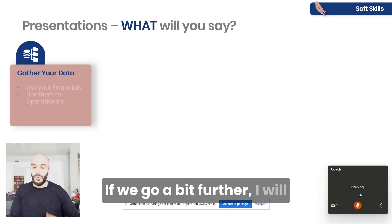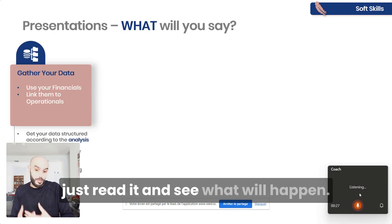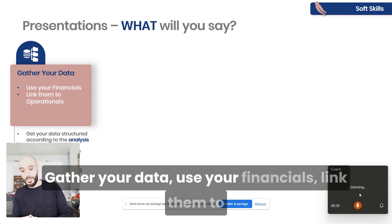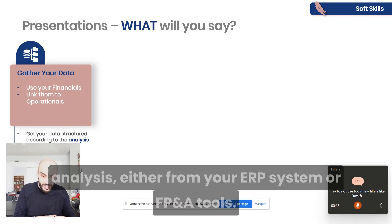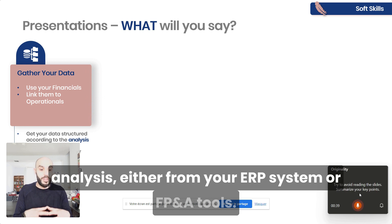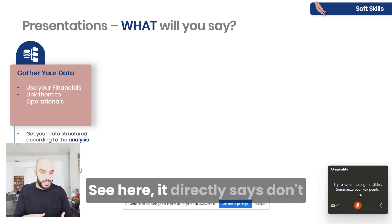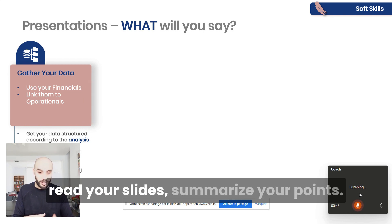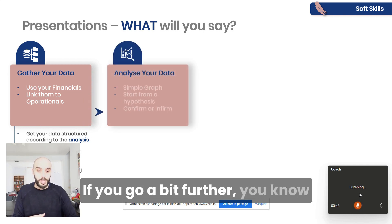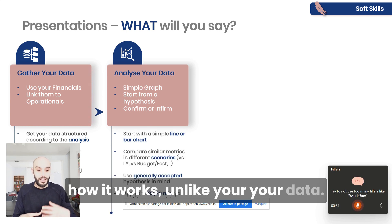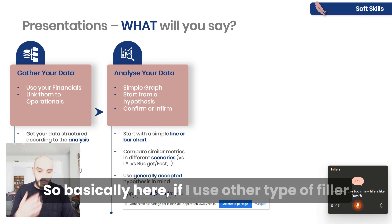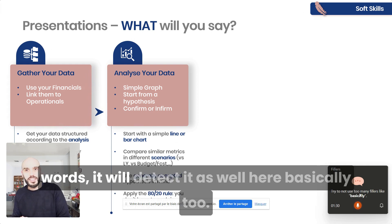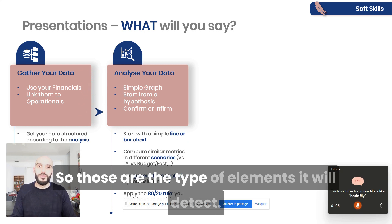If we go a bit further I will just read it and see what happens. 'Gather your data, use your financials, link them to operationals, get your data structured according to the analysis either from your ERP system or FP&A tools.' See here — it directly says 'don't read your slides, summarize your points.' Here another filler word. Basically, if I use other types of filler words it will detect them as well.